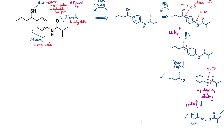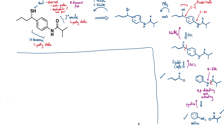For the Friedel-Crafts acylation we should get the para-substituted product. We're going to need a Lewis acid to make the acylium ion — a reactive enough intermediate to react with the benzene ring — so something like AlCl3 would be appropriate. Sodium borohydride should work for the ketone reduction. PBr3 converts the alcohol to the bromide, and thiourea followed by alkaline workup finishes the synthesis. This seems like a sensible disconnection plan, tracing back to cheap and readily available starting materials.